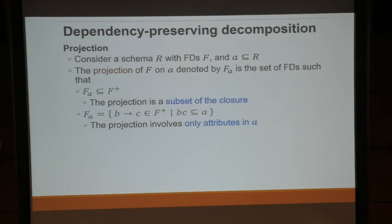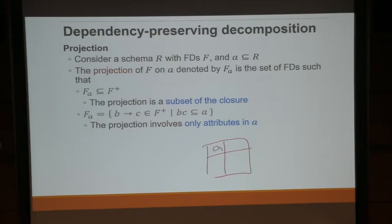The other part is dependency-preserving decomposition. You have a long list of functional dependencies F. Not all of the functional dependencies in F will be useful once you decompose into fragments, because some cross different tables. For example, if you have tables with attributes A, B and C, D, then A to C is kind of useless because you cannot enforce it — it exists on different tables.